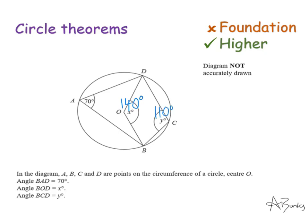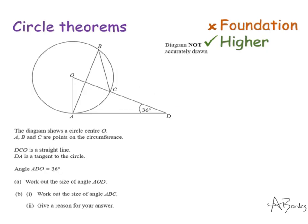Just be very careful here — a lot of students will think that x and y add up to 180 as if they're opposite angles in a cyclic quadrilateral. Don't fall into that trap: the vertices of the quadrilateral must touch the edge of the circle. O is the centre, not a point on the circumference, so x and y do not add up to 180.